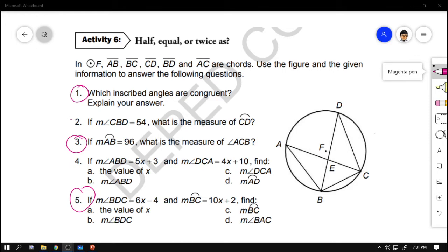So, for activity 6 of pages 168, half, equal, or twice as, you will be answering items 1, 3, and 5 only, and I'll be answering the rest. So, in circle F, arc AB, or should I say segment AB, segment BC, segment CD, segment BD, and segment AC are chords. Use the figure and the given information to answer the following questions.